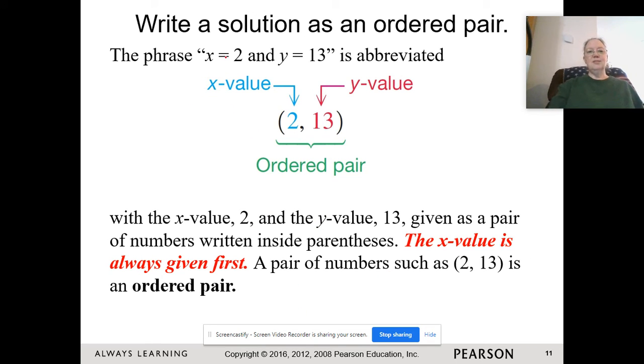That solution 2 and 13, we usually write it as what's called an ordered pair. Pair meaning we have two numbers. Ordered meaning the order in which we write the numbers is important. So we always write the x value first, and the y value always comes second.